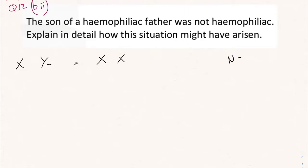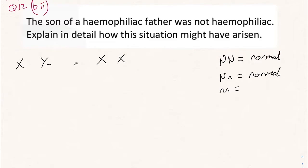Now we need to do a little key. Capital N equals normal — that includes capital N capital N, and capital N small n will also equal normal. If it is hemophilia, it will be two recessive letters, two small n's — hemophiliac.